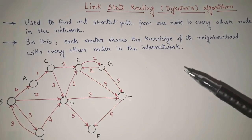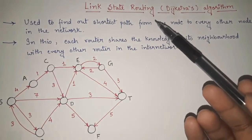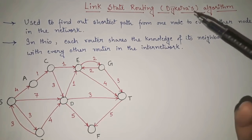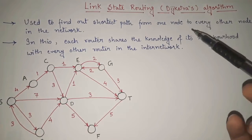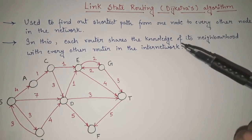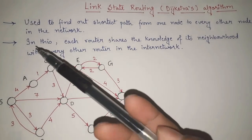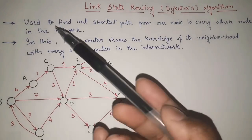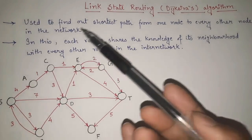Now in this video, we are going to see link state routing. For link state routing, we normally apply Dijkstra's algorithm. It is a very important algorithm. Today we are going to see what link state routing or Dijkstra's algorithm actually is and how it is applied. We will see it with the help of one standard example. So, what is link state routing and why is it used? It is used to find out the shortest path from one node to every other node in the network.